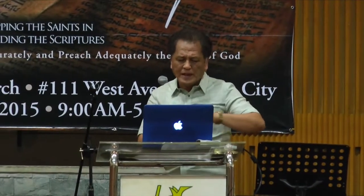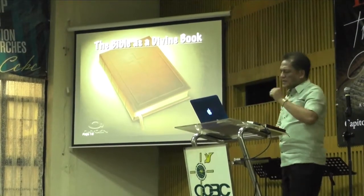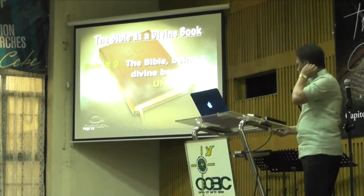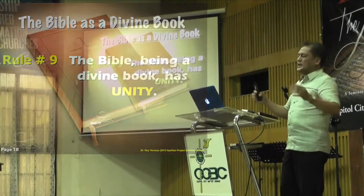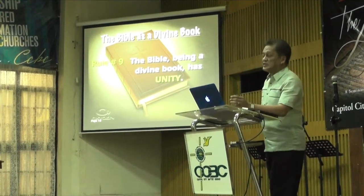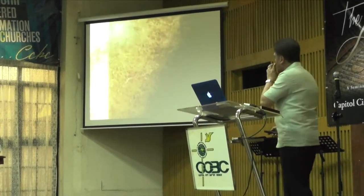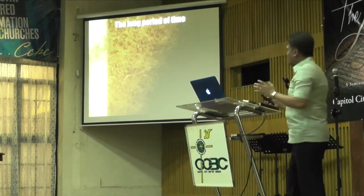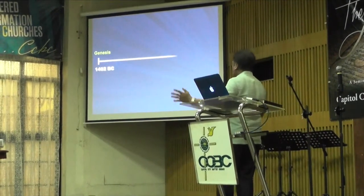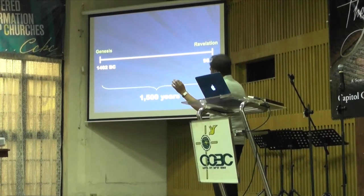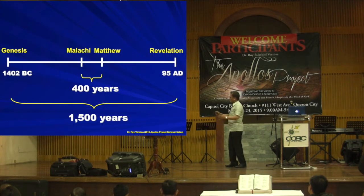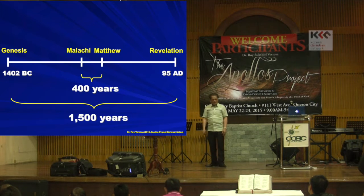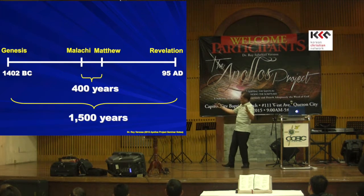That's number eight. Then number nine — the Bible being a divine book has unity. The unity of the Bible is one of the amazing evidences that the Bible indeed is the Word of God. Consider the following: number one, the long period of time in writing the Bible. The Bible is the only sacred book in all religions of the world written over 1,500 years, from Genesis to Revelation. From the Old Testament to the New Testament there's a gap of about 400 years, written over 1,500 to 1,600 years, according to some estimates.